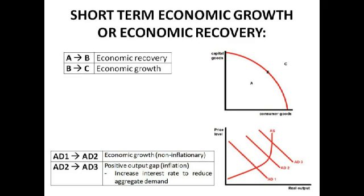It's really important to know the difference between economic growth and economic recovery, illustrated here on the production possibility boundary. When the economy is at point A on the PPB, it's not reaching its productive potential — the factors of production are not fully employed. Simply getting from A to B would be economic recovery, reaching the actual maximum level of output the country has the ability to achieve. Whereas going from B to C increases the ability of the UK to produce more goods and services — that's economic growth.